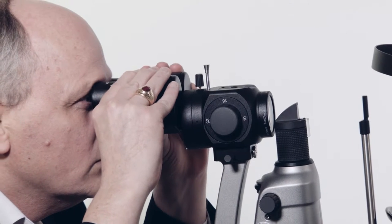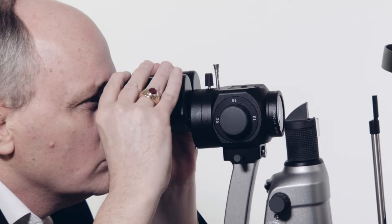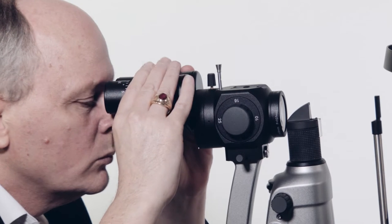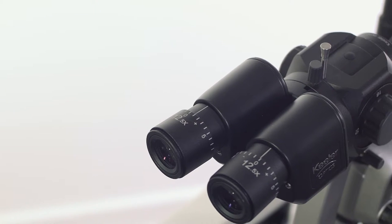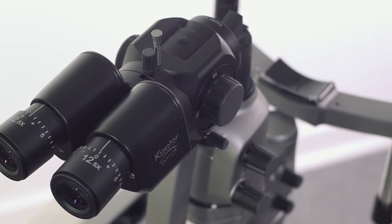Before using the slit lamp for examination, adjust the eyepiece's pupillary distance. The PD ranges from 49mm to 77mm on the 8-degree converging eyepiece and 38-85mm on the 0-degree parallel eyepiece.